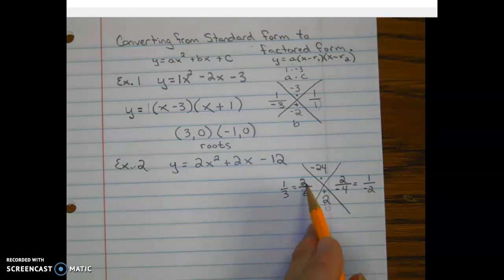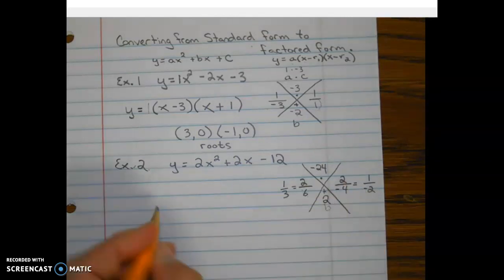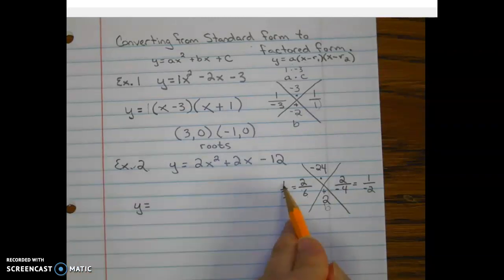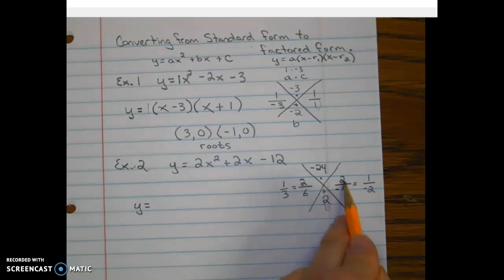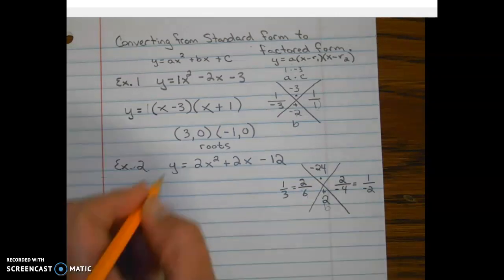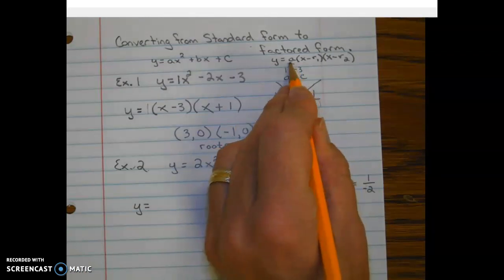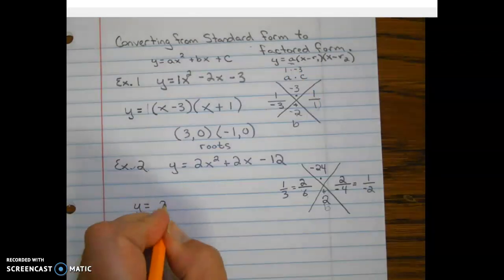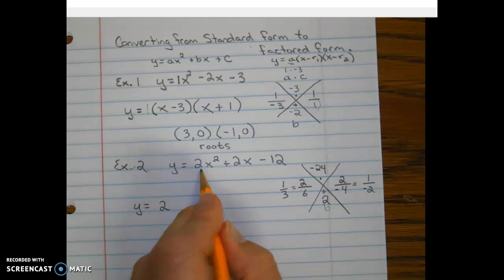Now we lost our A value. So when we write our factored form, we have to make sure... Notice the A value has been canceled out in both ratios. So you got to be careful that you don't lose your A value completely. So our A value for factored form is going to stay the same, which is 2.